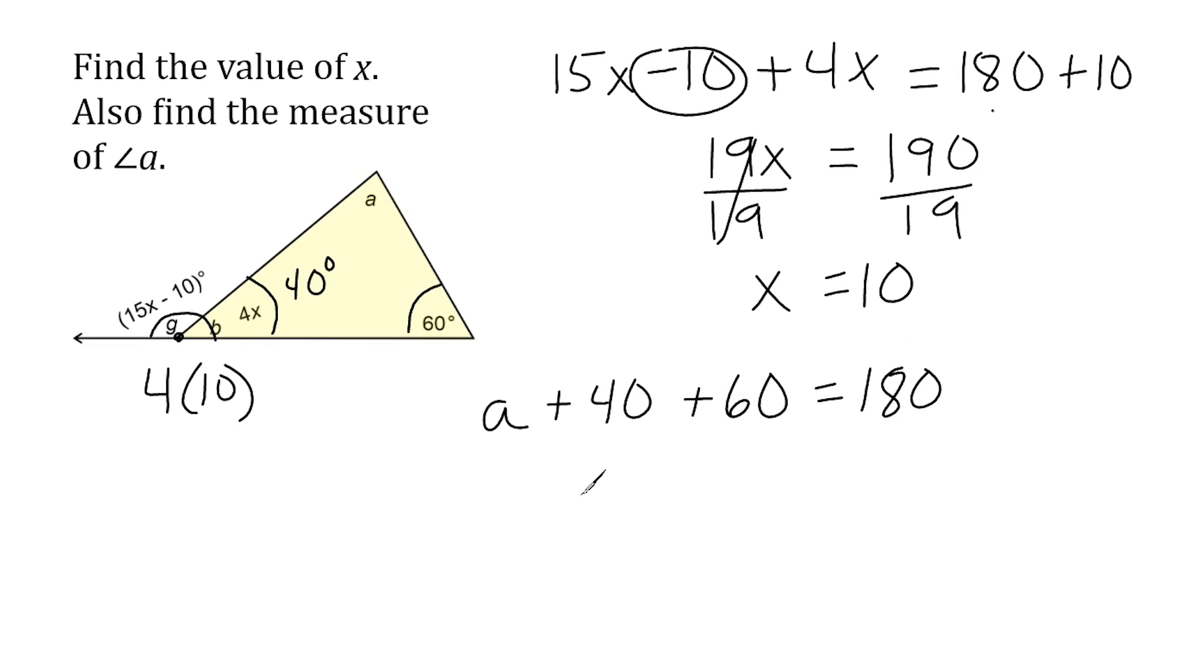So, now all we've got to do is figure out what A is so that when we add it to 40 and 60, it would be a total of 180. Well, we know that 40 plus 60 is 100 and the only thing that A could be to add to 100 to equal 180 would be 80.